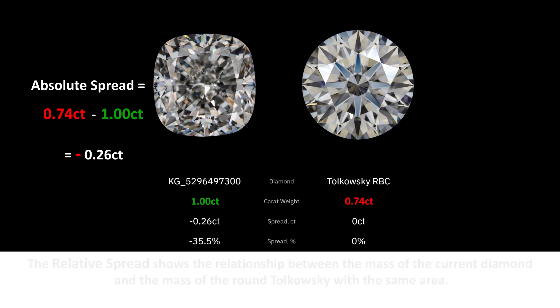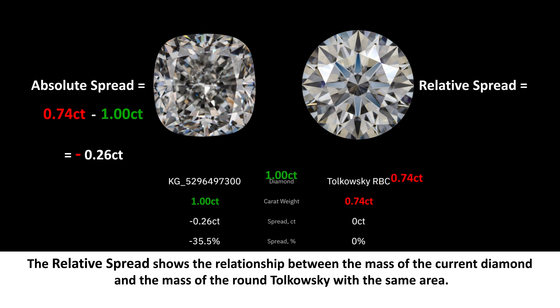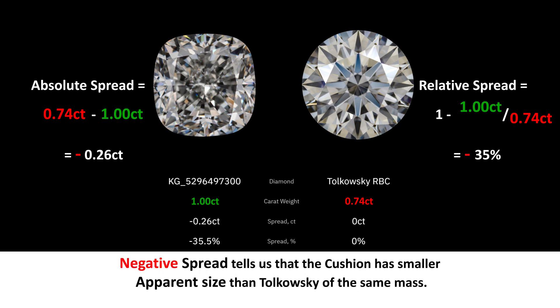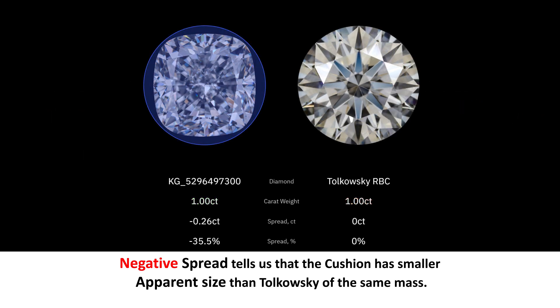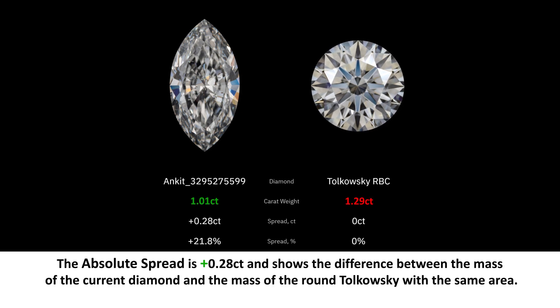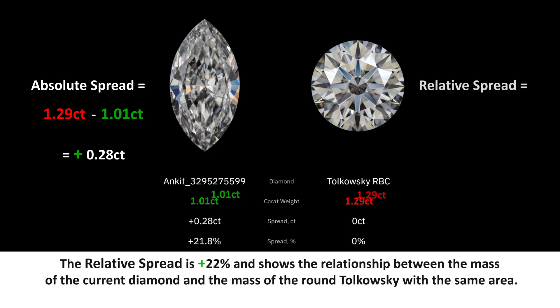The absolute spread shows the difference between the mass of the current diamond and the mass of the round Tolkowski with the same area. In the current case, it is minus 26 points. The relative spread shows the relationship between the mass of the current diamond and the mass of the round Tolkowski with the same area. In the current case, the relative spread is minus 35 percent. Negative spread tells us that the cushion has a smaller apparent size than a Tolkowski of the same mass. Let's consider a 1.01 carat marquise with positive spread — a round with the same apparent size will be 1.29 carats. The absolute spread is plus 0.28 carats and the relative spread is plus 22 percent.